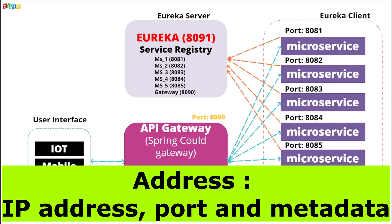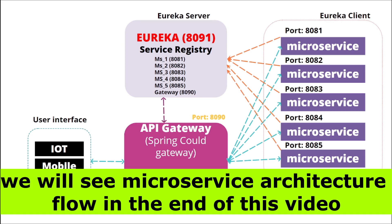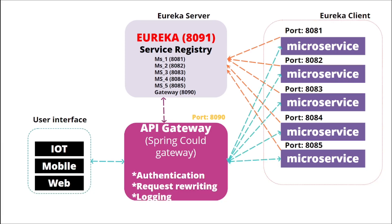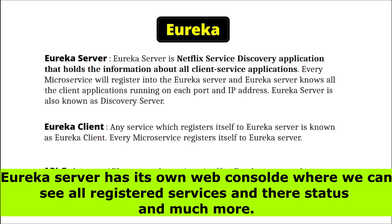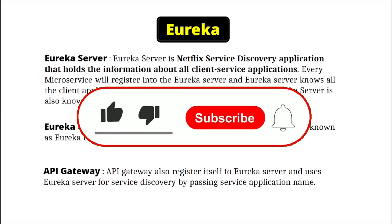Whenever a user interface calls any service, it first comes to the Gateway, and then Gateway tries to find out the application name based on the filter and predicate. It then passes the application name to the Eureka server and asks for the address of that particular application name. If Eureka has the address, it returns it to the Gateway and the Gateway calls that particular service. If Gateway receives multiple addresses, it sends the request to one of them considering the load on services. Eureka server is a Netflix service discovery application that holds information about all client service applications, knowing all client applications running on each port and IP address. Eureka server is also known as the discovery server.